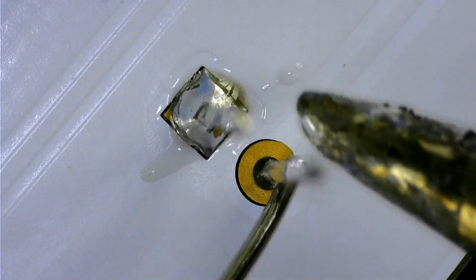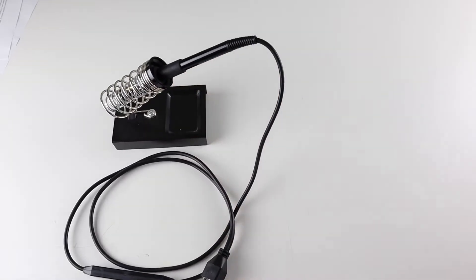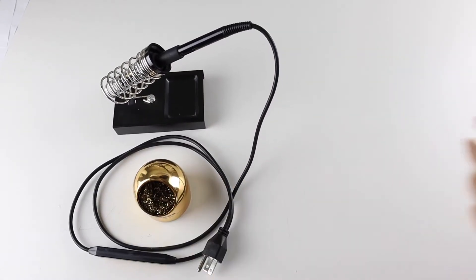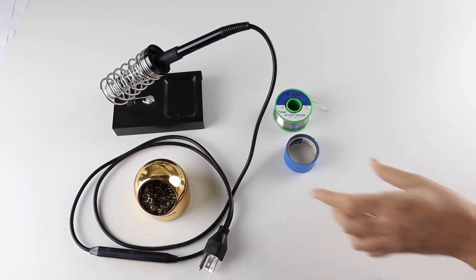There are a lot of different tools that help with soldering, but today we're focusing on the absolute basics that you'll need to get started. Those are a soldering iron with a stand, a tip cleaning sponge, solder, masking tape, and something to solder.